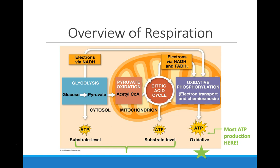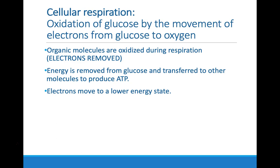We're going to start with a general overview of cellular respiration and then dive into each step. Cellular respiration is the oxidation of glucose — remember, oxidation involves loss, so the loss of electrons from glucose. Those electrons are going to be moved to oxygen, which is why oxygen is required as a reactant. Organic molecules are oxidized, meaning their electrons are removed, and when this happens they are converted into lower energy products. Energy is removed as electrons are moved.